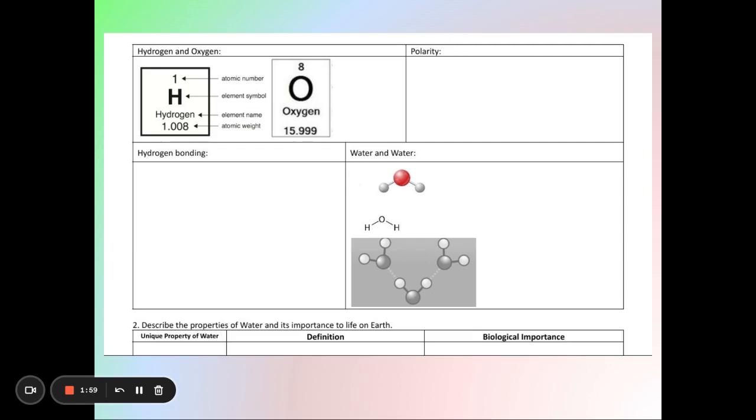And then at the bottom there's another number and sometimes it has a decimal place, sometimes it doesn't. So for hydrogen this other number is 1.008 or sometimes you might see it as 1.00794, and for oxygen it's 15.999 or sometimes you might see it as 16. So the number at the bottom is the atomic weight, also might be referred to as atomic mass or the mass number.